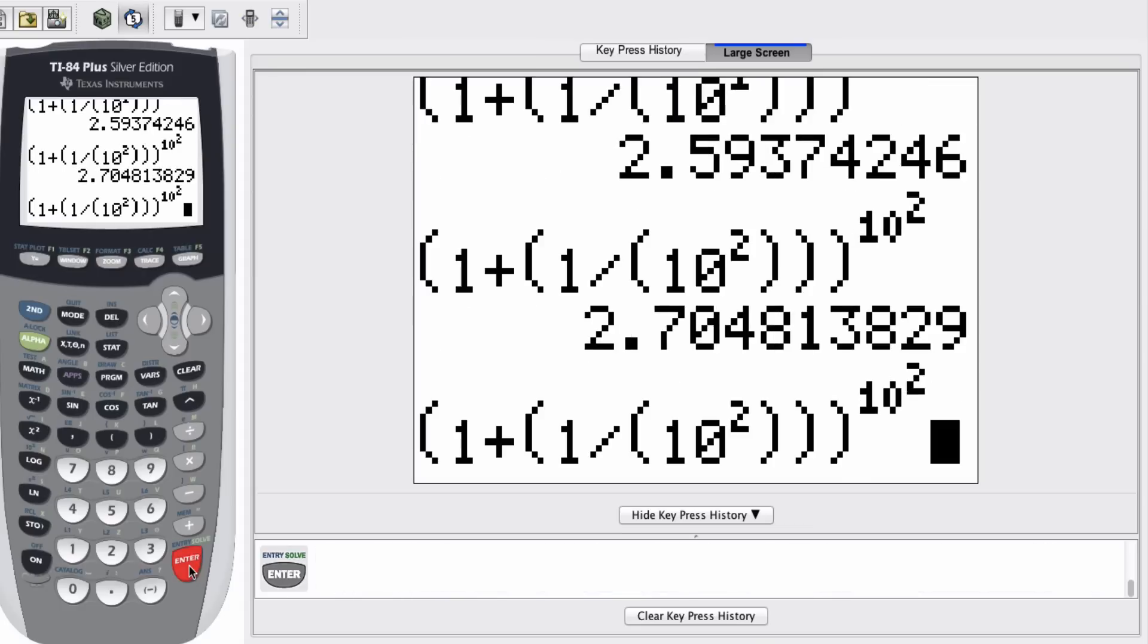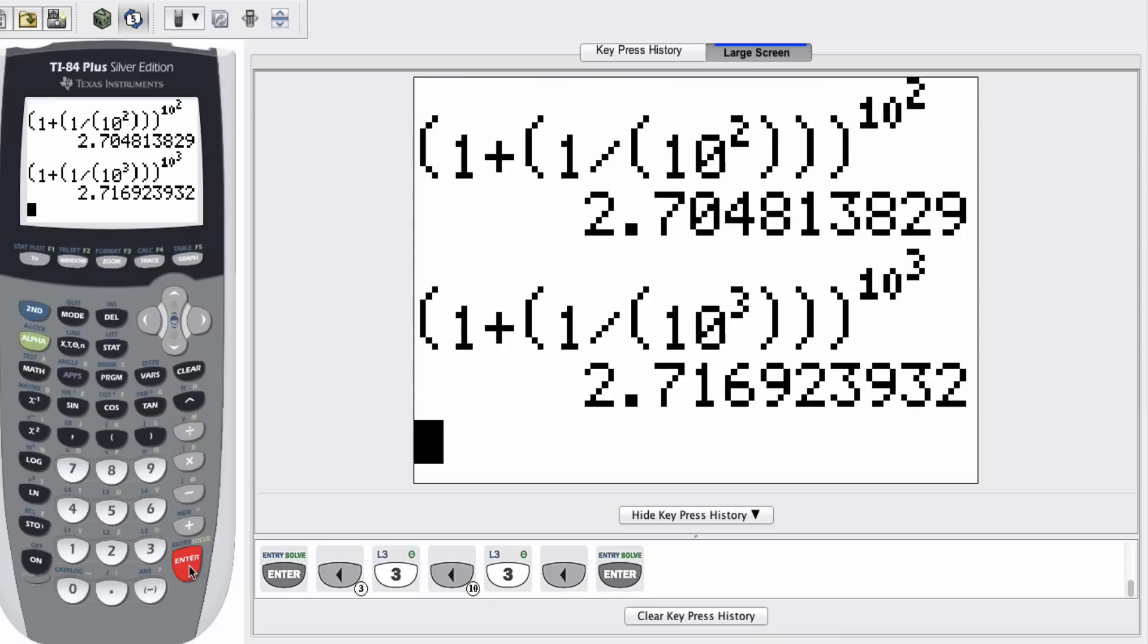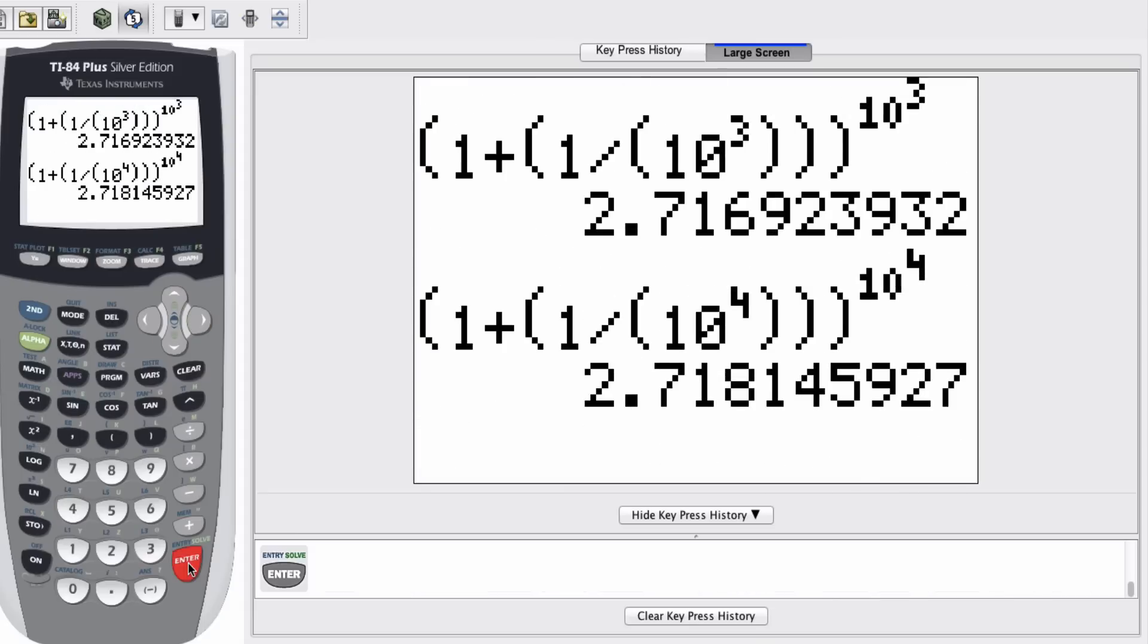And so my next value should be 2.705. I'm going to do second entry again. And this time, I'm going to make it to the third power. Notice this is just much easier than typing in this whole expression again and again. Okay, so you guys can kind of see what I get to the third power. Now I'm going to do to the fourth power. There we go. I'm going to press enter.